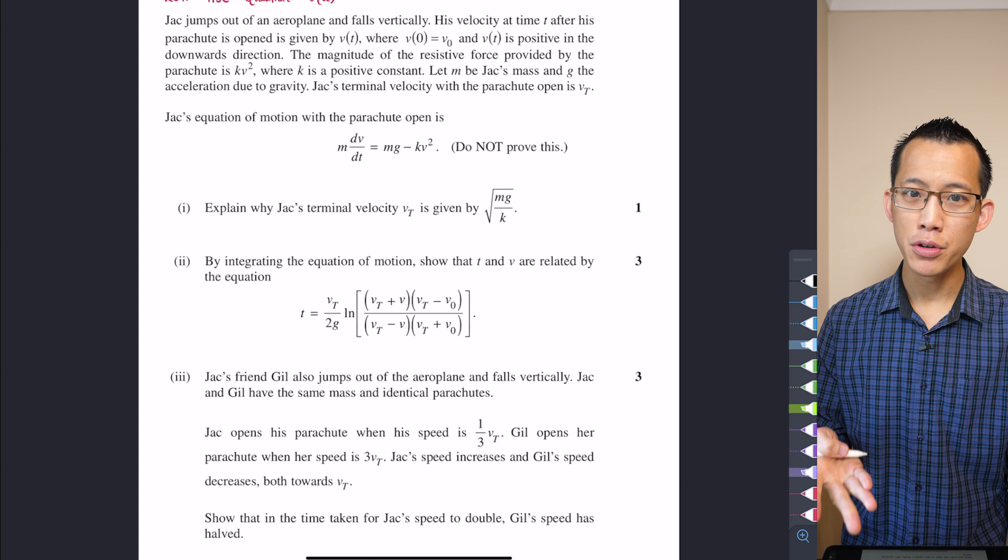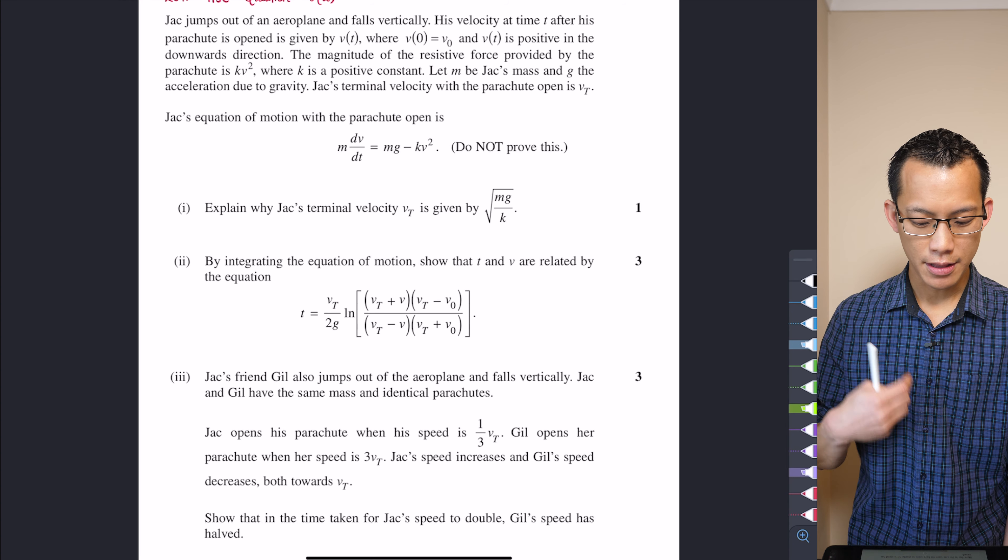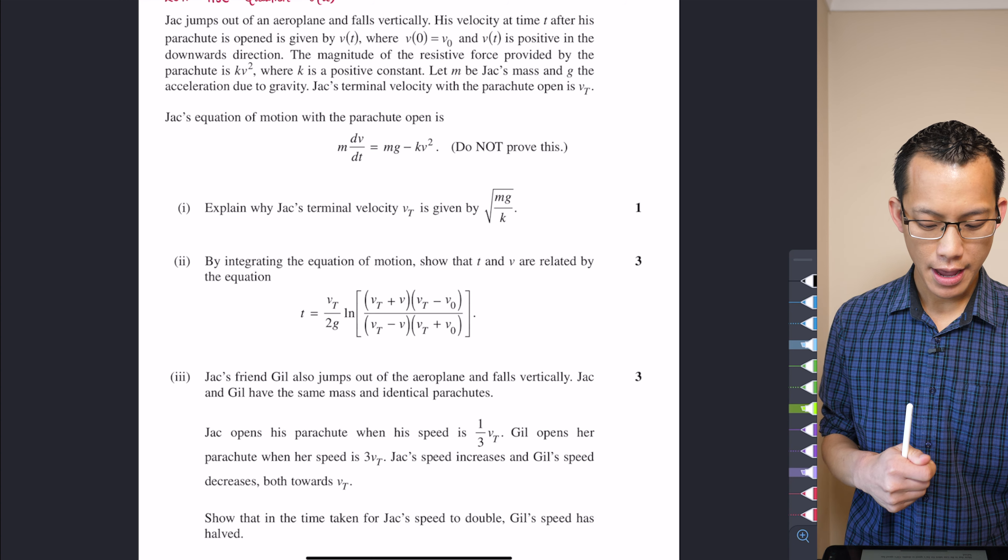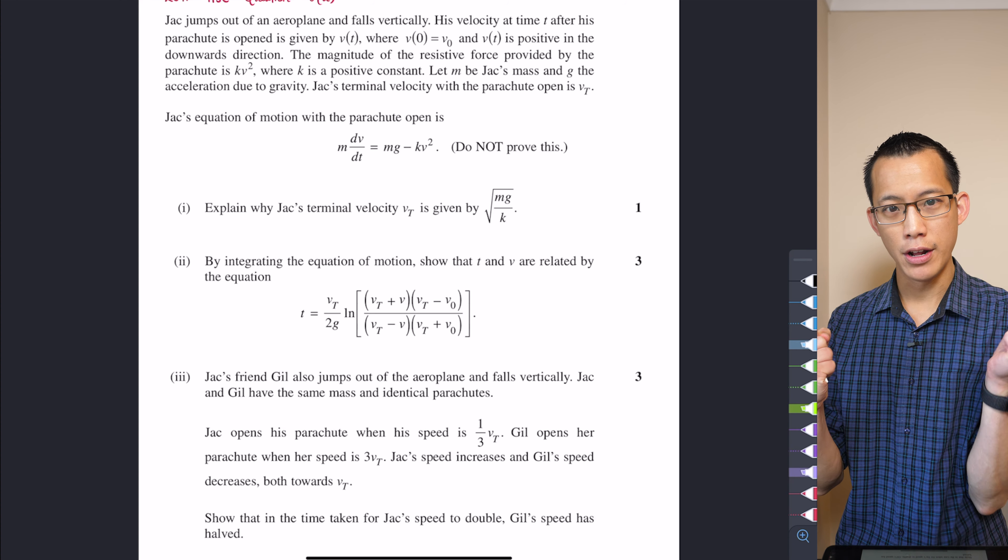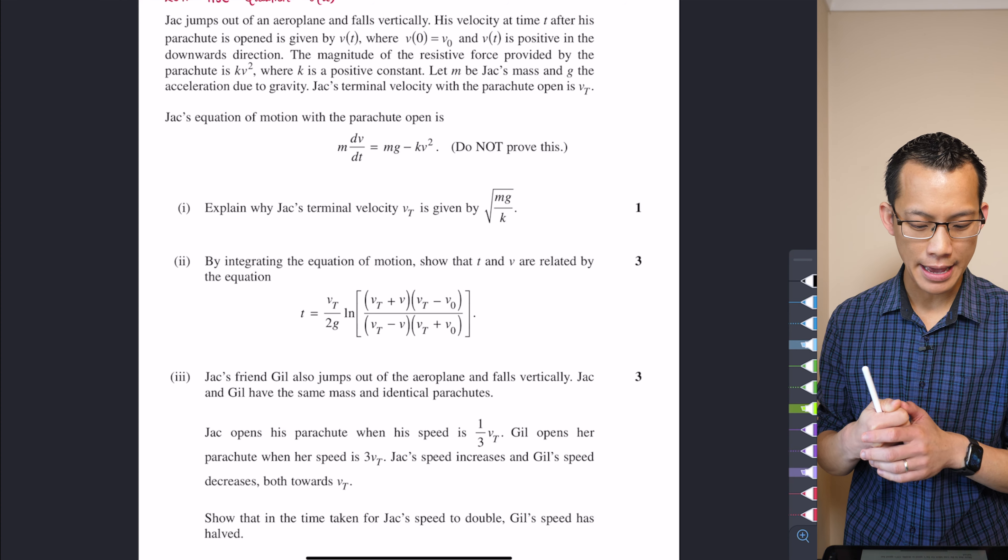But the whole idea is you get given a fairly classic vertical resisted motion situation, right? They're jumping out, they pull their parachute. And so you've got gravity pulling them downwards, but then you've got this parachute pushing up against them.